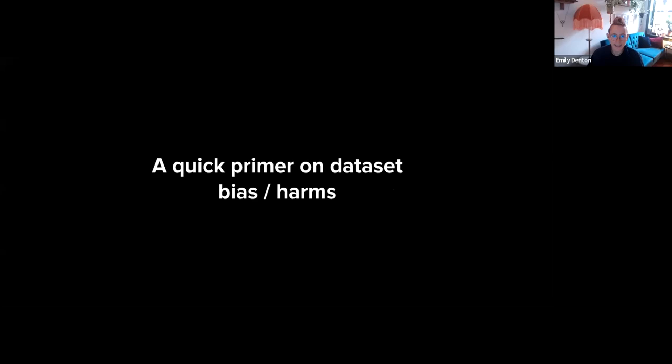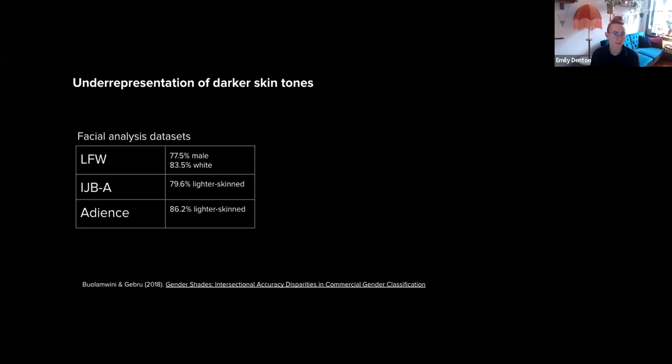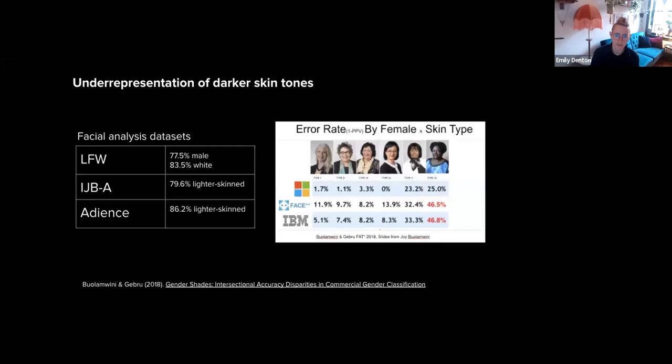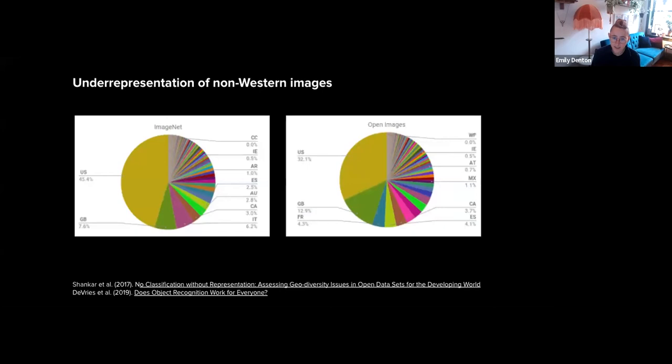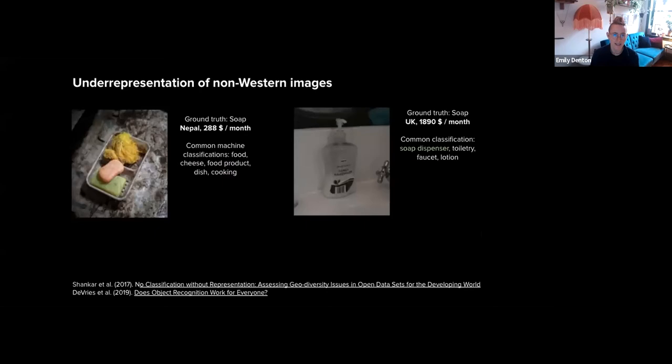Before getting into the meat of this talk, I want to give a super quick primer on machine learning dataset bias and harms. In recent years there's been growing concern regarding the degree and manner of representation of different socio-demographic groups within prominent machine learning datasets. Facial analysis datasets, for example, have been shown to significantly under-represent darker skin subjects, and this has direct implications for models developed from this data. Common object recognition datasets skew heavily towards western images, and this has direct implications for systems trained on these datasets — object recognition systems have been shown to perform poorly on images depicting objects from non-western homes.